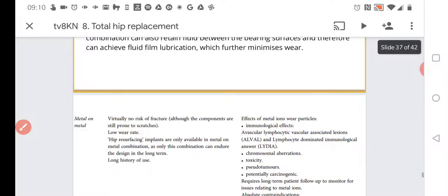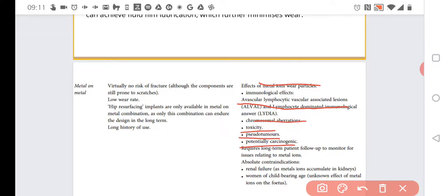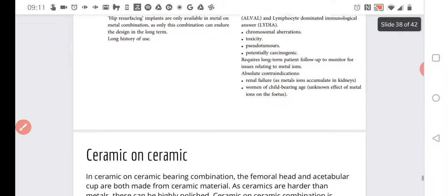However, although macroscopically there is no big problem with wear, microscopically it's different. We have some wear particles that are very small, that are generally metal ions. And these metal ions would interact with our organism and can lead to inflammation and osteolysis. And not only local problems, but we can also have avascular lymphocytic vascular associated lesions, chromosomal aberration, toxicity, pseudotumors, carcinogenicity. Generally, there are some additional problems related to those particles.